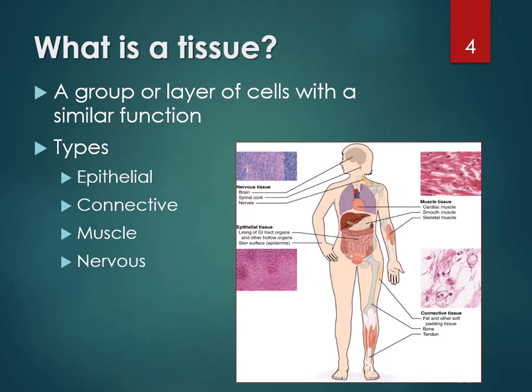Those four tissues make up organs, which is the next level up. Next unit, you'll be starting one of the organ systems. This slideshow will mostly discuss epithelial, connective, muscle, and nervous tissue. When you get to the test or quizzes, you'll want to remember the characteristics of each. There are lots of examples, and you'll mostly need to know the differences based on characteristics rather than visual identification.